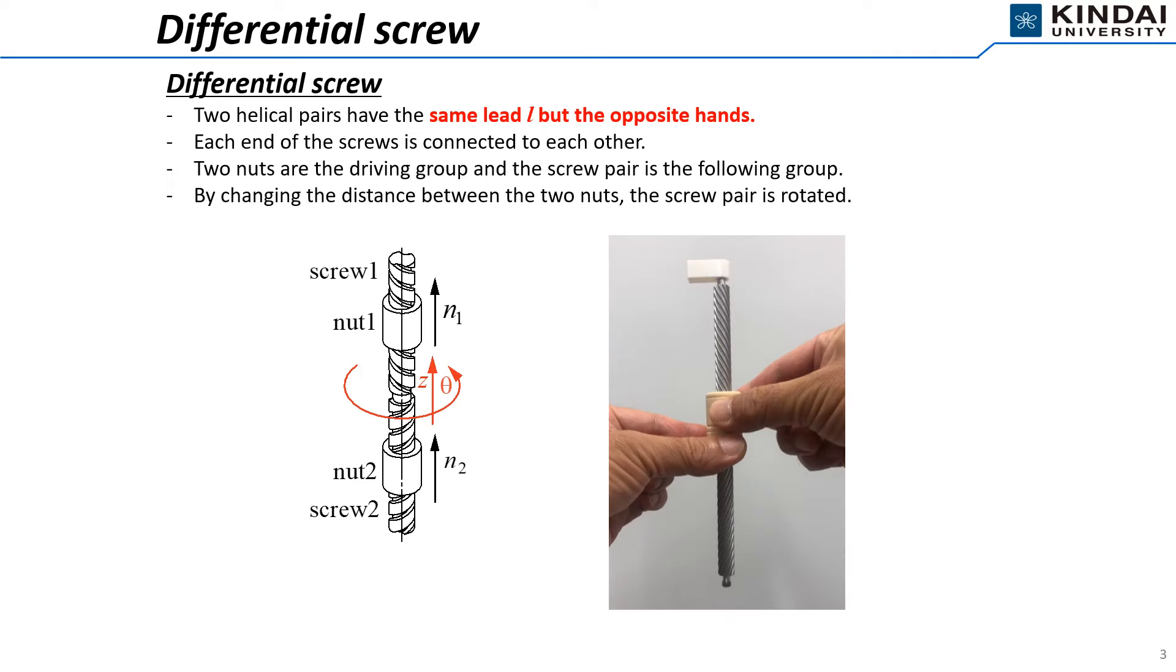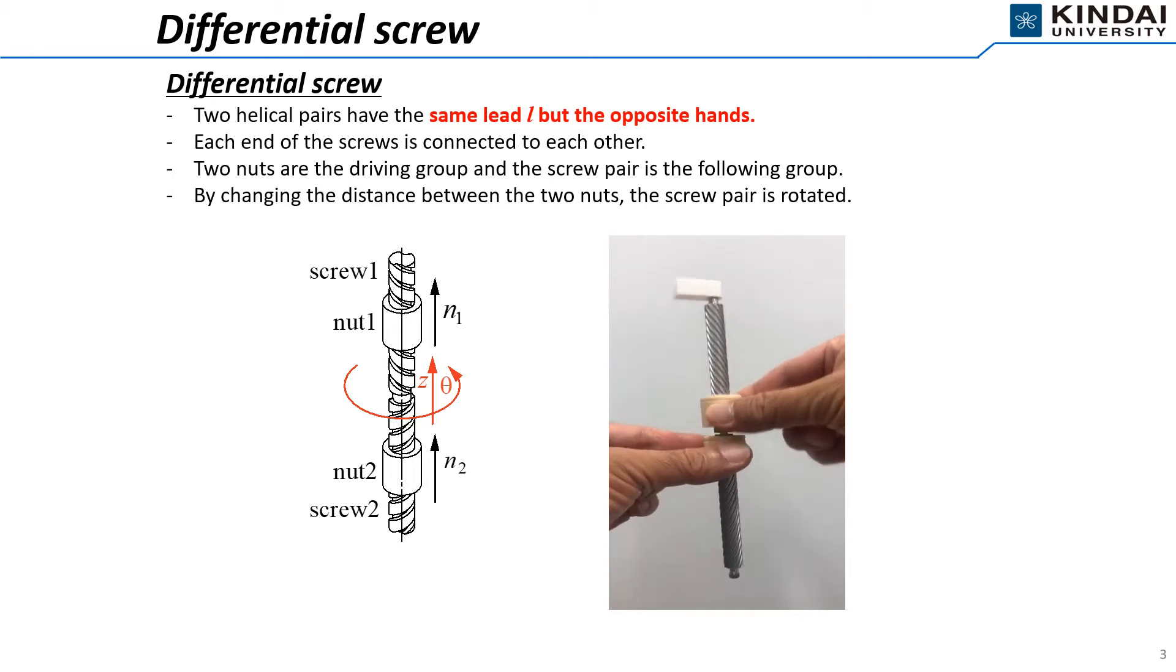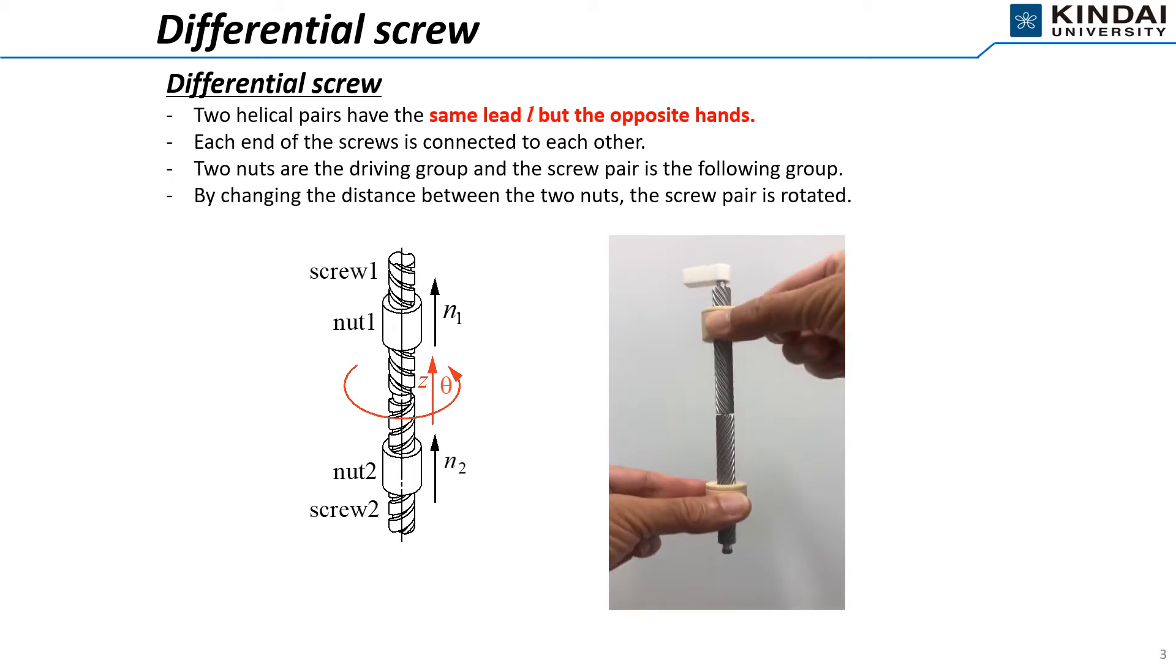I introduce another mechanical gimmick for enlarging the rotation workspace by a differential screw. By changing the distance between the two nuts, the screw pair is rotated as shown in the video.